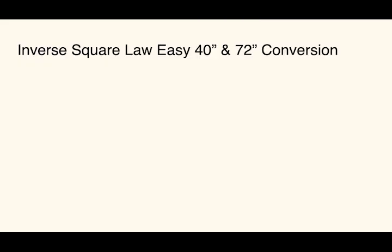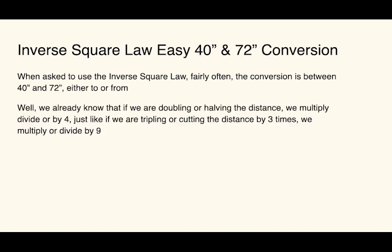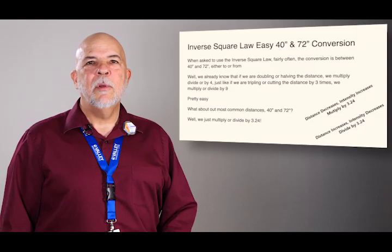So the conversion for 40 to 72 inches, this happens all the time in word problems. So again, if we're just doubling our distance or multiplying the distance times three, then we just square that multiplication number and then divide our intensity. Pretty easy. But at our distance of 40 to 72, they're not quite that square. So if we are decreasing our distance, our intensity is getting higher, so we multiply times 3.24. If we're increasing our distance, it becomes less intense, so you divide by 3.24. Pretty simple, straightforward, and easy.